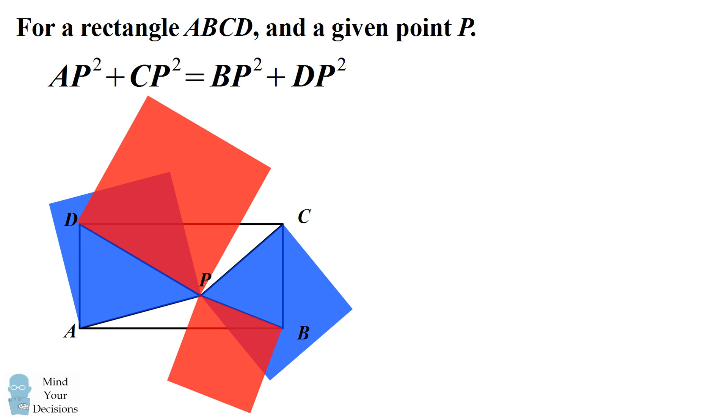For this equation to be true, it means that the total area of the blue squares is equal to the total area of the red squares.